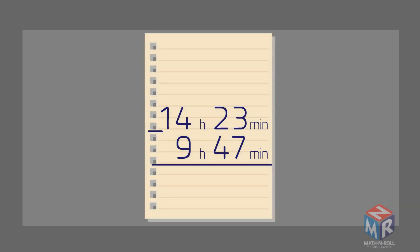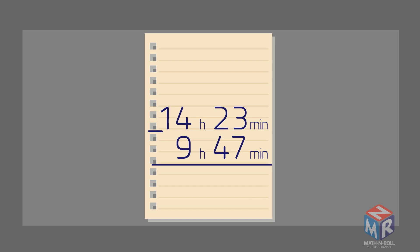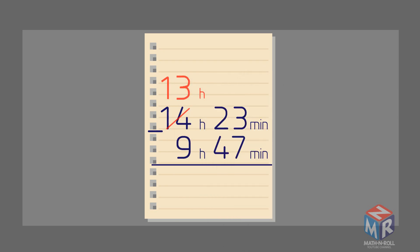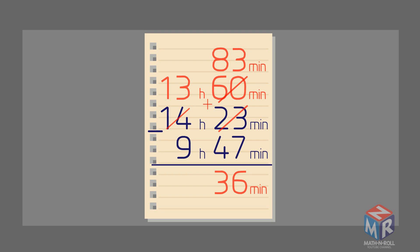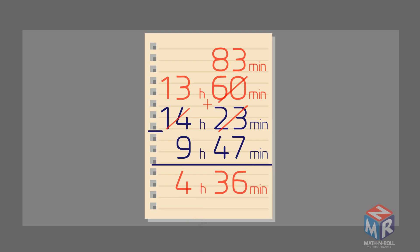Let's try another example. Take a look at the minutes. We can see that the number of minutes at the top is smaller than the number at the bottom. So we have to borrow an hour to make this number bigger. We cross out 14 hours and make it 13 hours. Instead of carrying 1 hour, we carry 60 minutes, because there are 60 minutes in 1 hour. 60 plus 23 becomes 83 minutes. Now we can subtract 47 from 83 — it is 36 minutes. 13 hours minus 9 hours equals 4 hours. So the answer is 4 hours and 36 minutes.